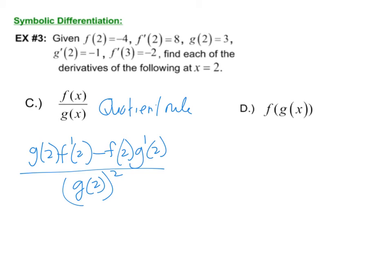So we have g(2) is 3. Times f prime of 2, which is 8. Minus f of 2, which is -4. And g prime of 2, which is -1. All over 3 squared. So we have 24 minus 4, it looks like, over 9. So that's going to be 20 over 9.